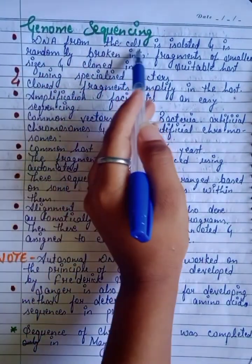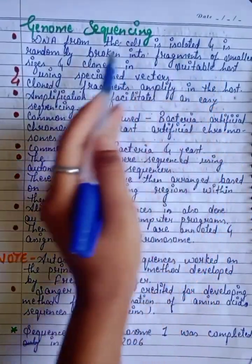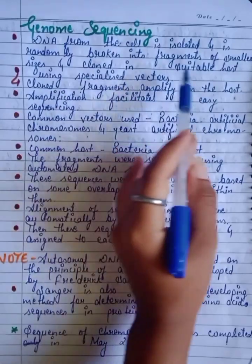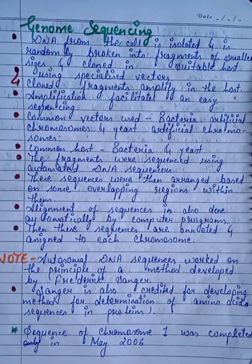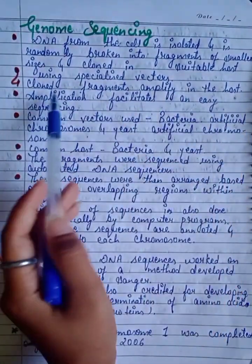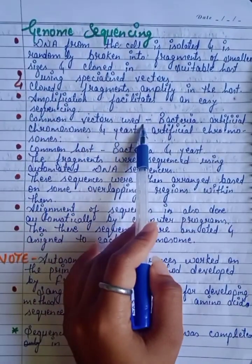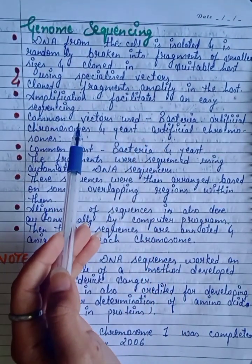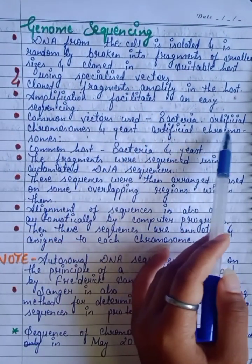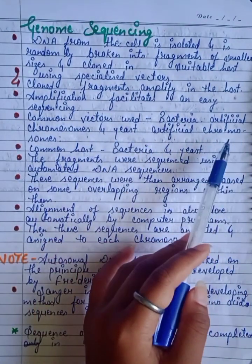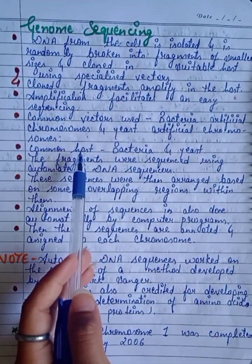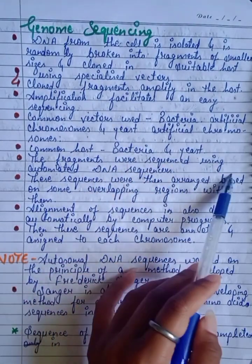In genome sequencing, DNA from the cell is isolated and is randomly broken into fragments of smaller size and cloned in a suitable host via a vector. Clone fragments are amplified in the host — amplification facilitates easy sequencing. Common vectors used are Bacteria Artificial Chromosomes and Yeast Artificial Chromosomes, with bacteria and yeast as common hosts.